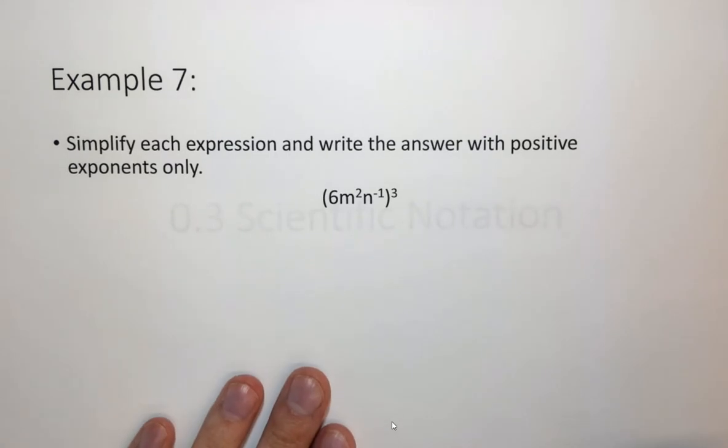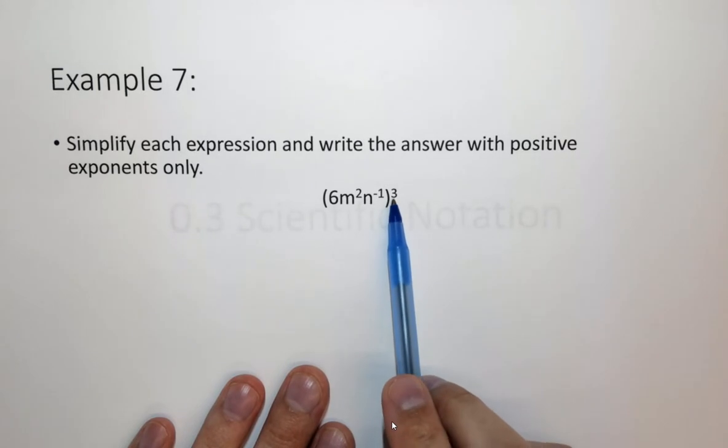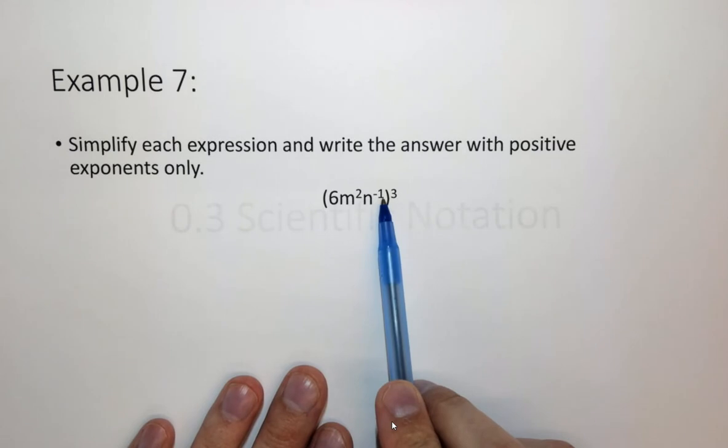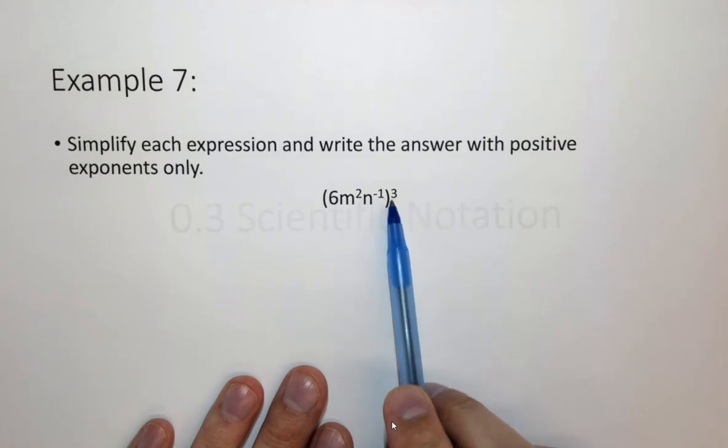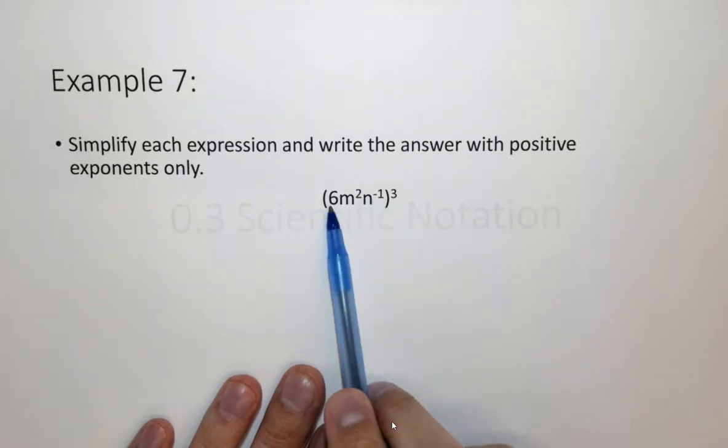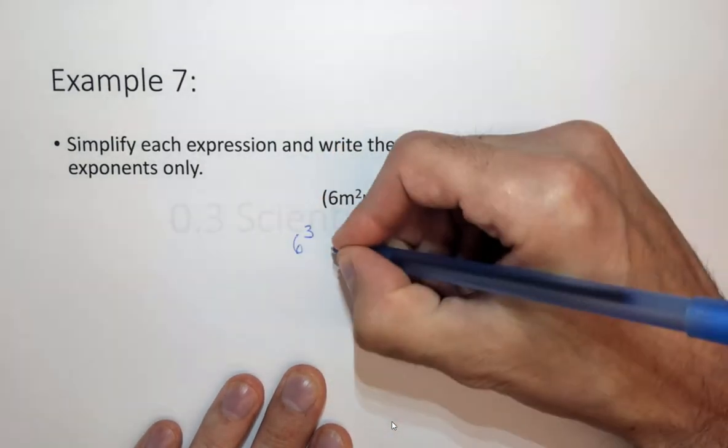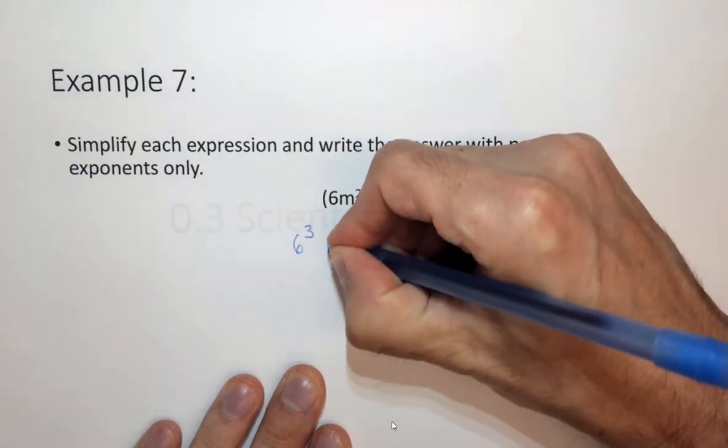So let's look at this example here. Here we have cubing 6m squared n to the minus 1. We need to distribute this cubed function. So we need to take 6 cubed, m squared cubed which is m to the sixth,